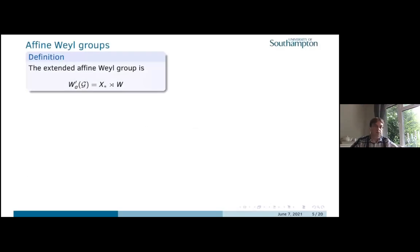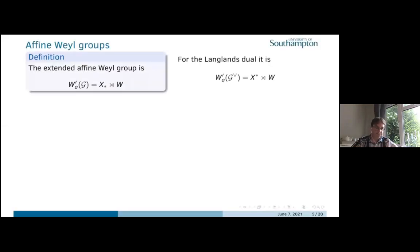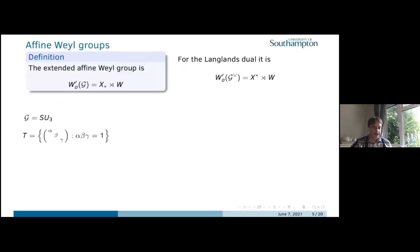The affine Weyl group is simply the group generated by the Weyl group along with the co-characters. For the Langlands dual, the Weyl group stays the same but the lattice changes — exactly what we saw in the triangle group example at the beginning. Let's think about G as SU(3): SU(3) is the A2 case, and the maximal torus has rank two, given by diagonal elements of modulus one whose product is one.